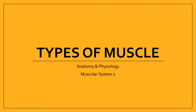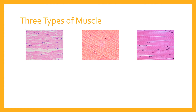Welcome to this video on the muscular system. We're going to spend some time thinking about the three types of muscle present in the human body. They're present in varying proportions, and we mainly want to focus on the structure of the muscle and especially the functions and characteristics of these different types of muscle.